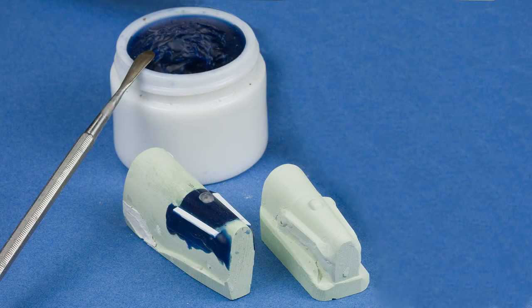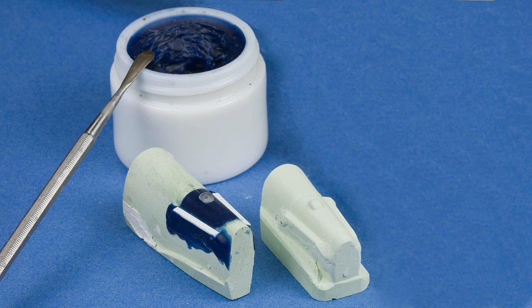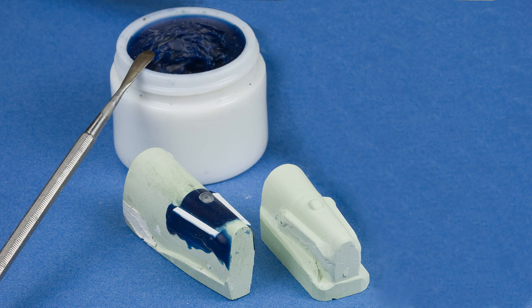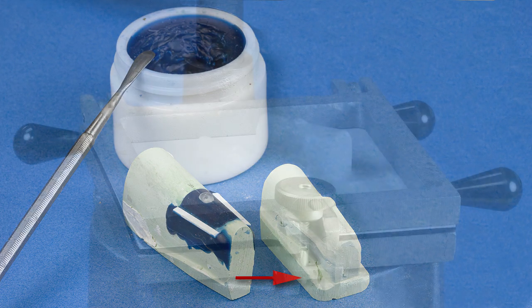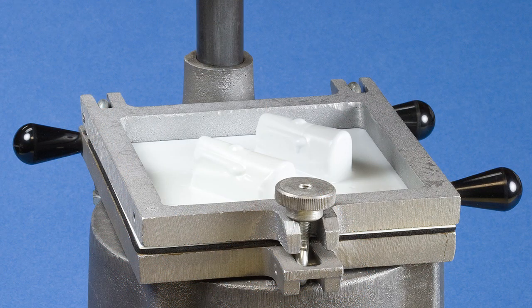A mold was made of the tail wheel cut out of the Tempest. Wax, styrene, and acrylic were used to block out the final shape of the tail wheel doors. A mold was made of the door shape and the form poured from HydraCal. The doors were formed from styrene sheet.